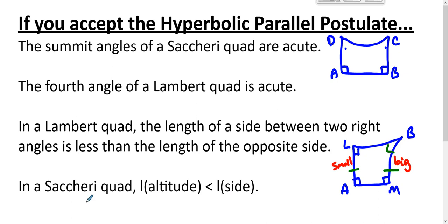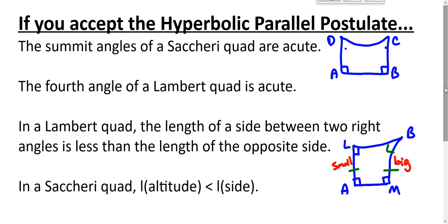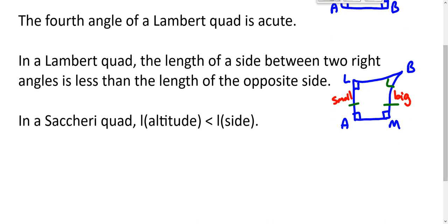Similarly, in a Saccheri quad, the length of the altitude is less than the length of the side. Why is that? Let's clarify the vocabulary. What do we mean when we say that? You've got some Saccheri quad, or a Khayyam quad. A and B have the right angles, C and D like so. When we talk about the altitude, we're talking about that segment that connects the midpoint of the summit to the midpoint of the base.